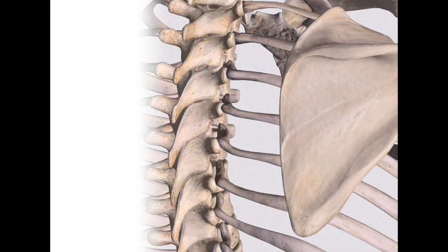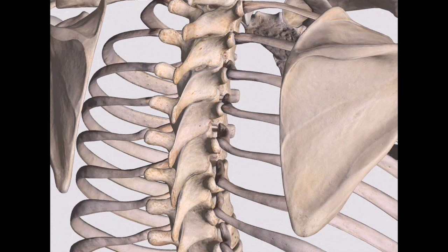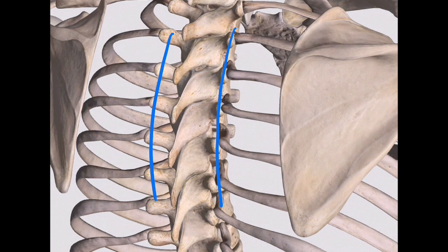Let's figure out how to name different dysfunctions in the thoracic region through some examples. Let's pretend we're looking at the back of the skeleton at an angle and these are the transverse processes that you're palpating. Let's pretend this was an example of a skeleton in the neutral position.